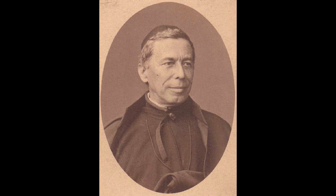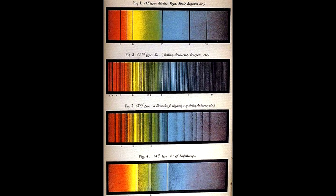He started cataloguing the spectra of various stars and identified four major classes — classes one through four. What he was looking at was the dark absorption lines caused by various elements, and in some cases molecules, inside the stellar atmospheres.